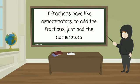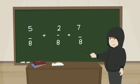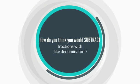If fractions have like denominators, to add the fractions just add the numerators. 5 eighths plus 2 eighths equals 7 eighths. How do you think you would subtract fractions with like denominators?